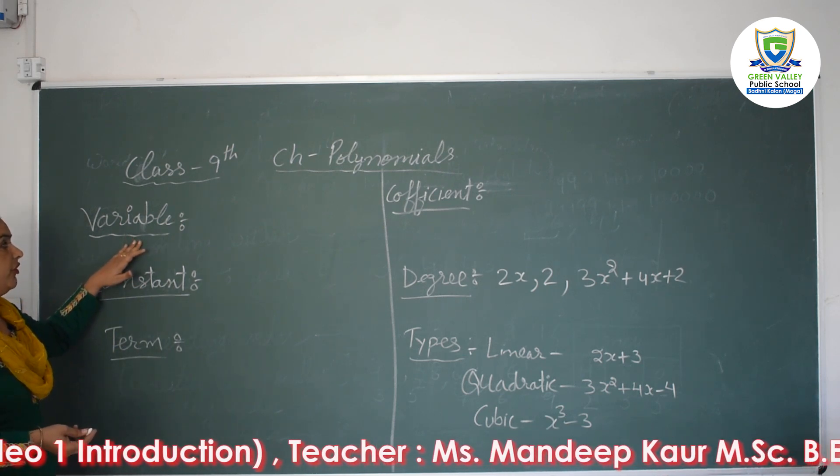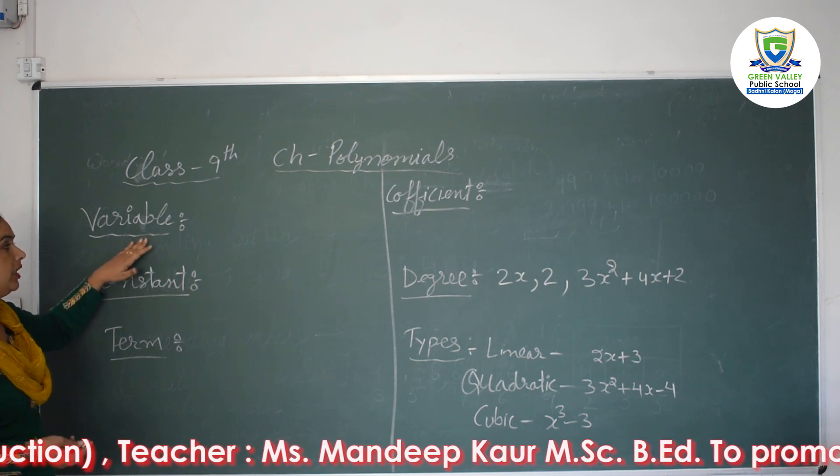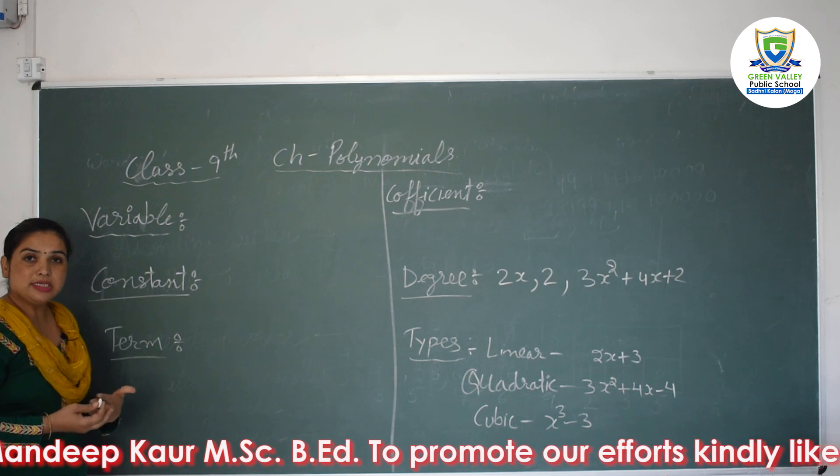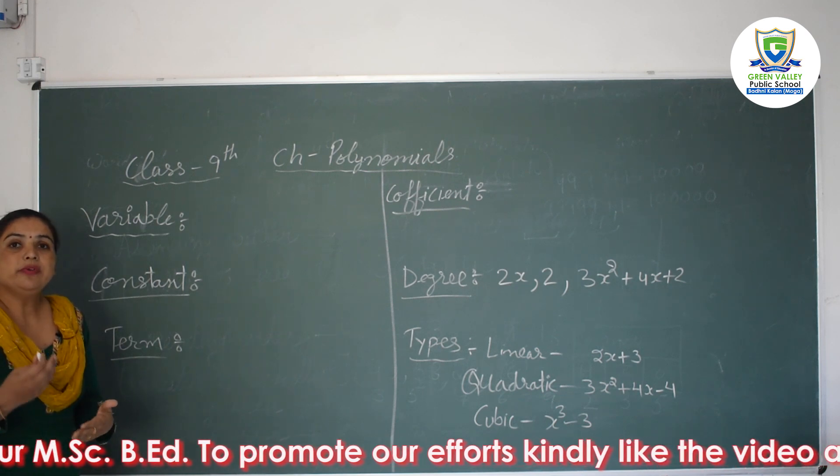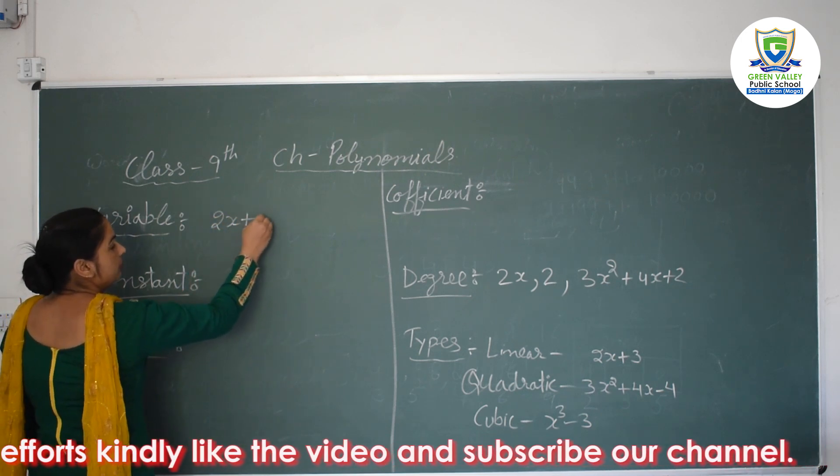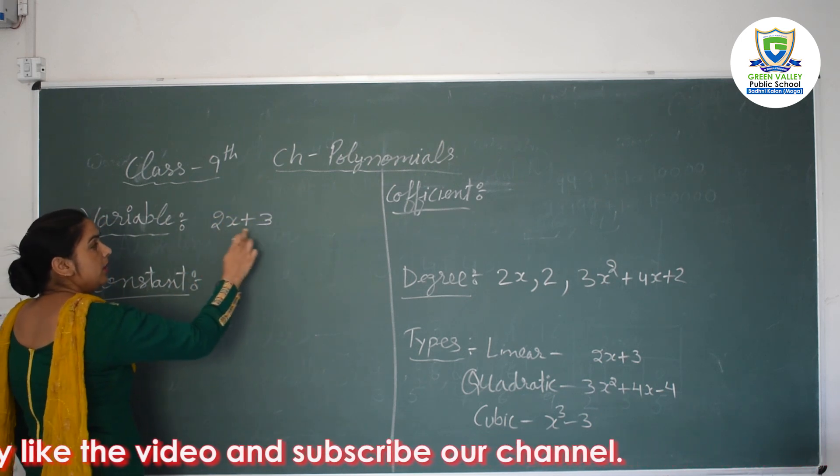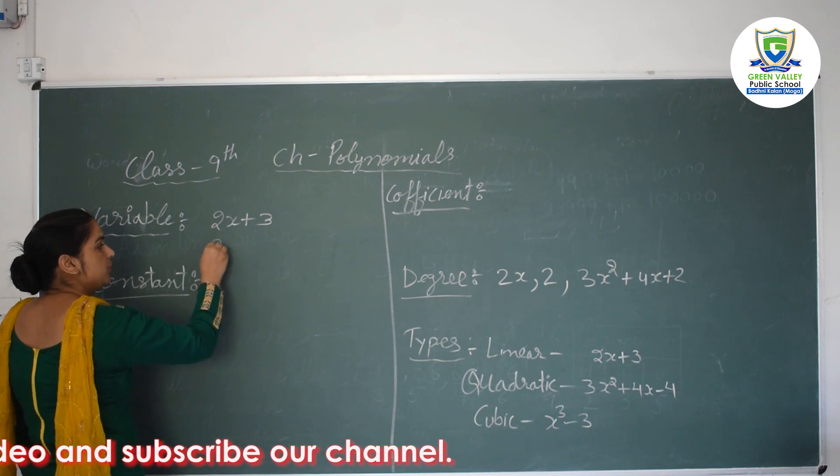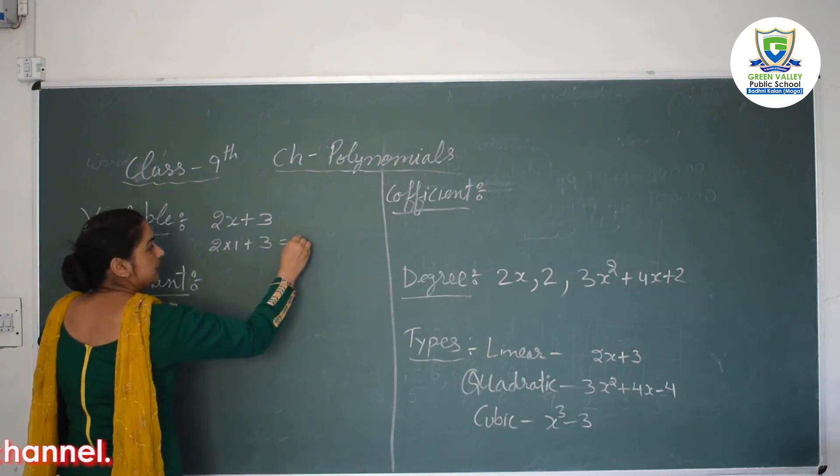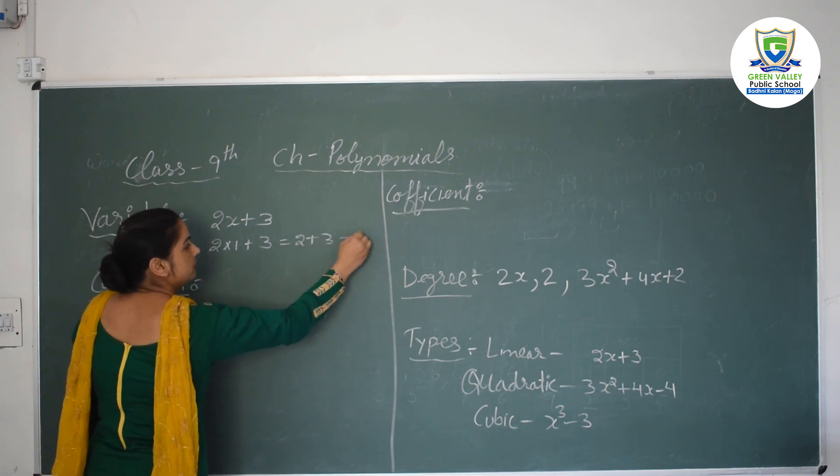First I have written variable. What is variable actually? Variable is, in simple words, whose value is getting changed. For example, I'm taking here one polynomial. In this, if I substitute x value as 1, then I will get my answer 2 plus 3, that is 5.